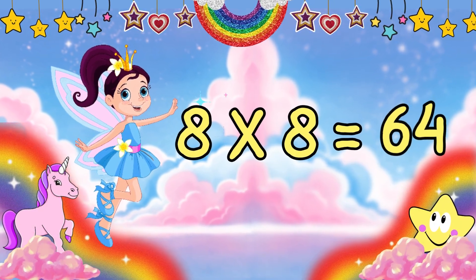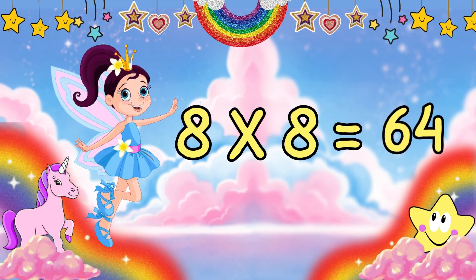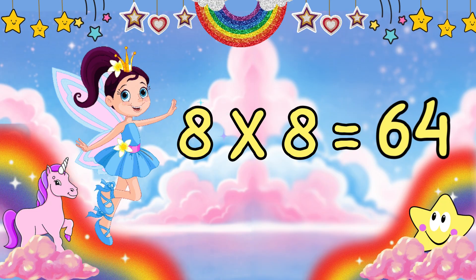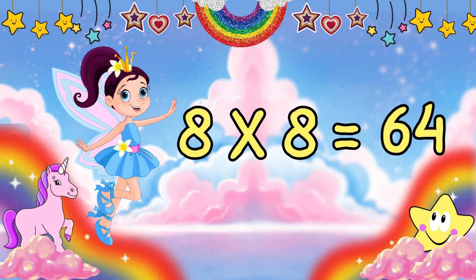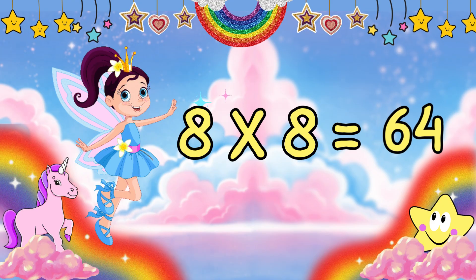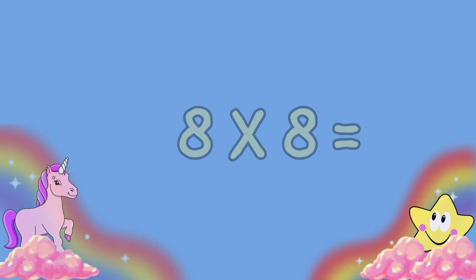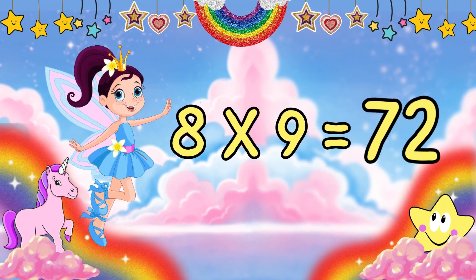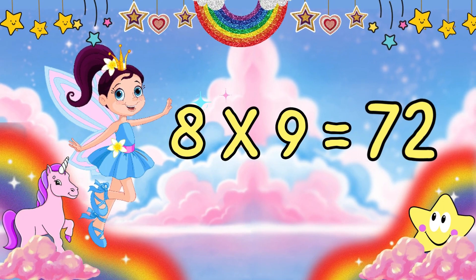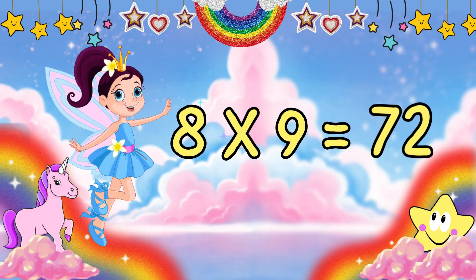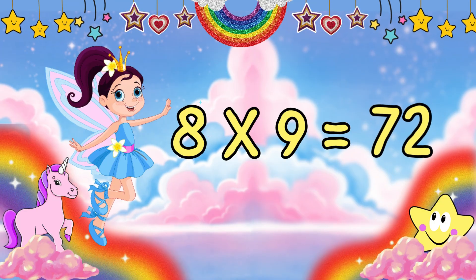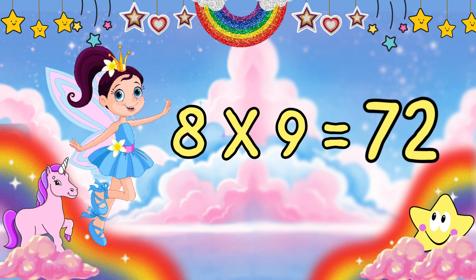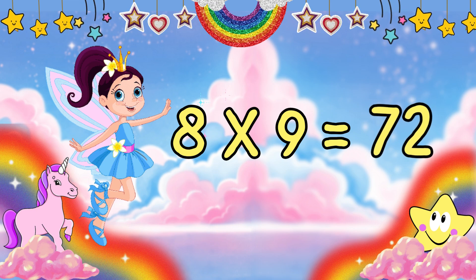Do you know what 8 times 8 is? 8 times 8 is 64. Can you say 64? S-I-X-T-Y, 60, F-O-U-R, 4, 64. Do you know what 8 times 9 is? 8 times 9 is 72. Can you say 72? S-E-V-E-N-T-Y, 70, T-W-O, 2, 72.